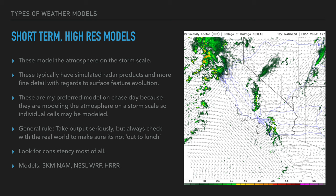If the HREF shows a storm in Kiowa County, Oklahoma, but the storm actually forms two counties north, that's because you weren't checking the data — being a county or three off on storm initiation is normal. You have to check satellite and surface observations to be guided. The big thing I look for is whether models are convecting — if all models are convecting, count on storms. But you still have to assess whether the environment favors tornadoes; the models won't tell you everything.